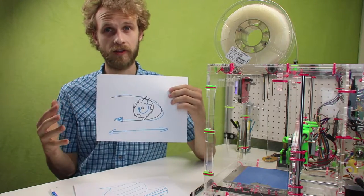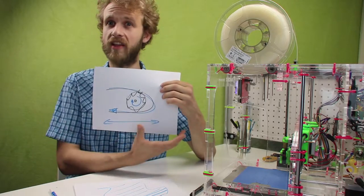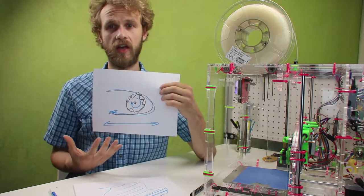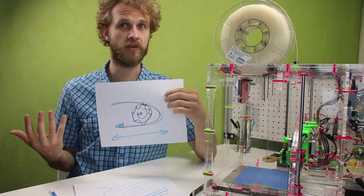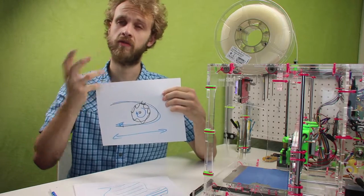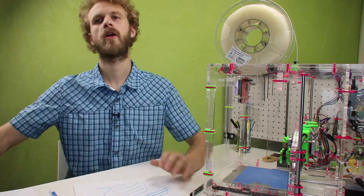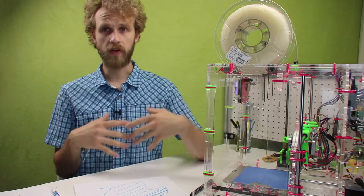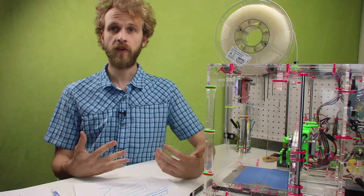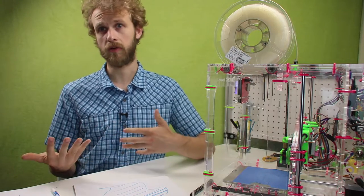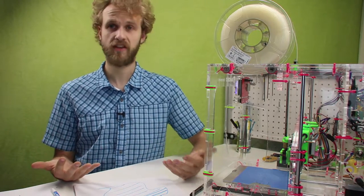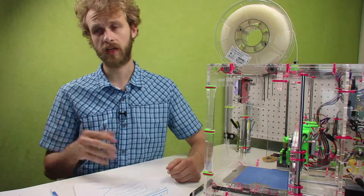The slicer wants length, linear distance, but what the stepper motor understands is degrees, rotational motion. So in the printer, there is a coefficient that defines this relationship between steps and millimeters. And it's literally in steps per millimeter. And you can check that in your settings.